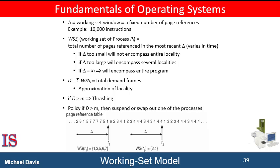The accuracy of the working set depends upon the selection of delta. If delta is too small, it will not encompass the entire locality. If delta is too large, it may overlap several localities. In the extreme, if delta is infinite, the working set is the set of pages touched during the process execution. The most important property of the working set, then, is its size.